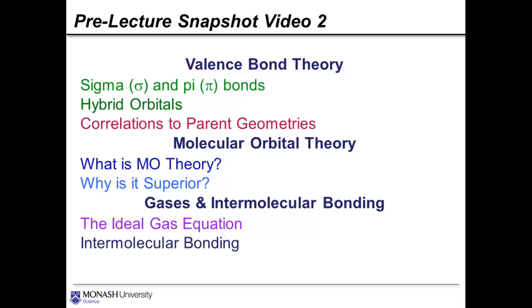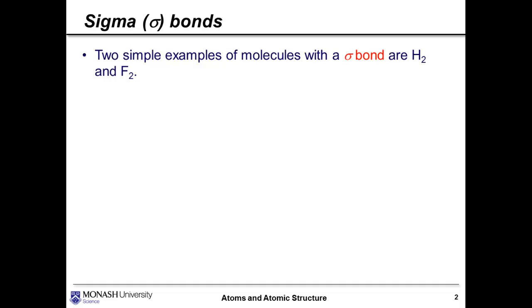In week 5 we're going to talk about MO theory. I'll talk very briefly about what it is and why it's superior to drawing Lewis structures using VSEPR, and even slightly superior to valence bond theory. And then finally we'll talk very briefly about gases and intermolecular bonding, which is the week 6 topic. In this section we'll introduce the ideal gas equation and speak very briefly about the different kinds of intermolecular bonding.